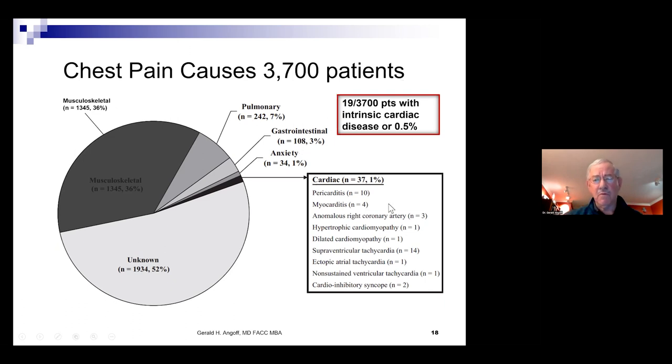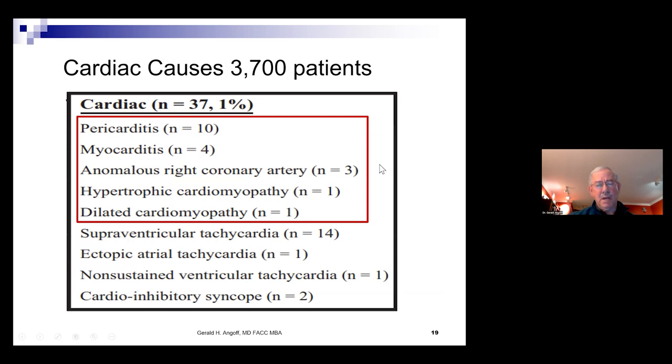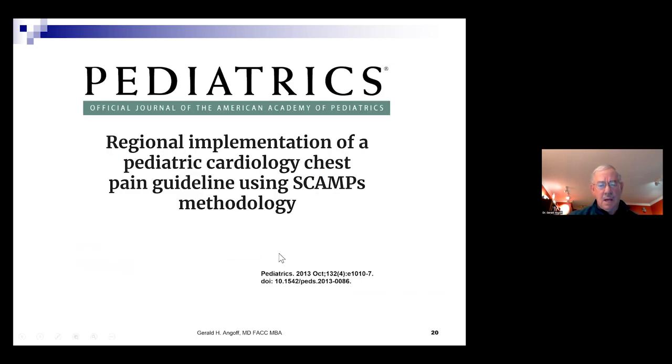Anxiety, psychosocial problems would follow. Most, more than fifty percent were unknown, never really defined despite any efforts. Nineteen of the three thousand seven hundred patients had intrinsic cardiac disease, zero point five percent. And of those clear cardiac conditions, pericarditis and myocarditis were most common. Three had an anomalous coronary artery, a congenital defect. One hypertrophic cardiomyopathy and one dilated cardiomyopathy out of three thousand seven hundred patients.